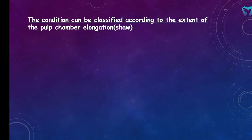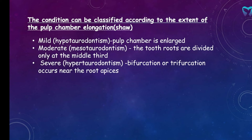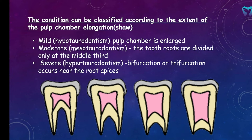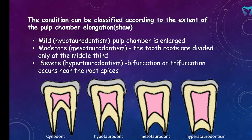There is a classification by Shaw based on the extent of pulp chamber elongation. Mild is hypotaurodontism, where just the pulp chamber is enlarged. Moderate is mesotaurodontism, where the roots are divided only at the middle third. Severe is hypertaurodontism, where the bifurcation or trifurcation lies next to the root apices, so the tooth looks rectangular. A synodont is a normal tooth. This classification was given by Shaw in 1928 based on the apical migration of the furcation area.